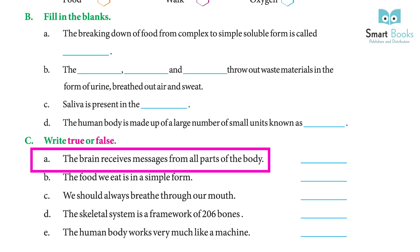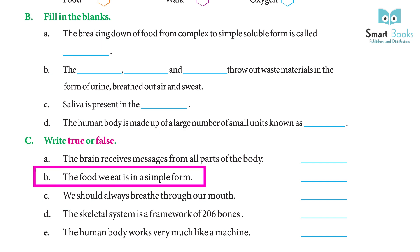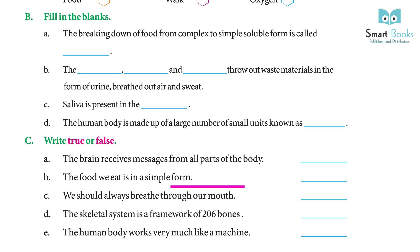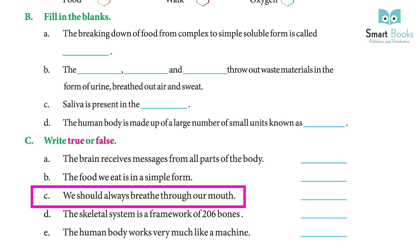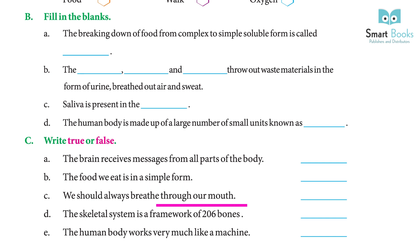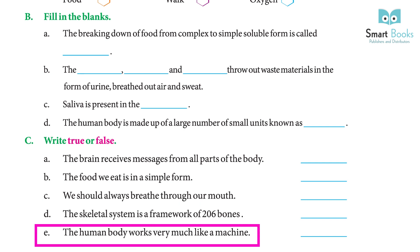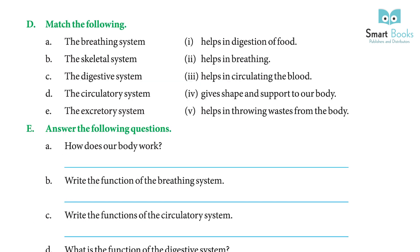Exercise C — True or False: (a) The brain receives messages from all parts of the body — True. (b) The food we eat is in a simple form — False. (c) We should always breathe through our mouth — False. (d) The skeletal system is a framework of 206 bones — True. (e) The human body works very much like a machine — True.